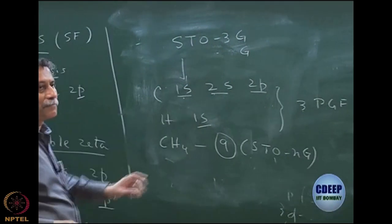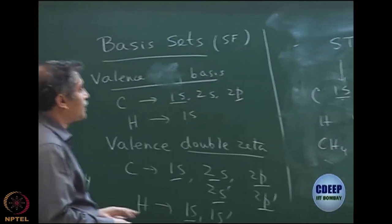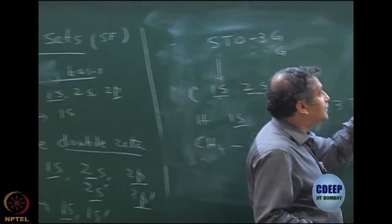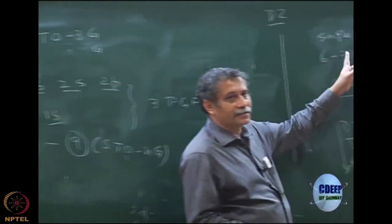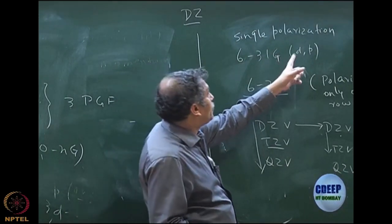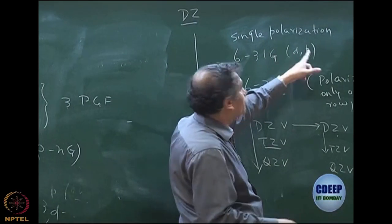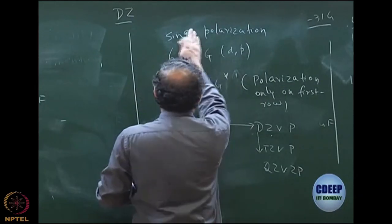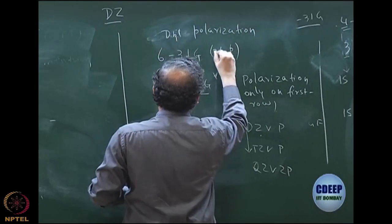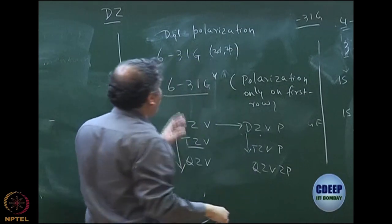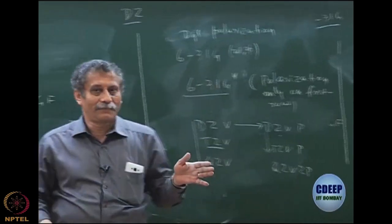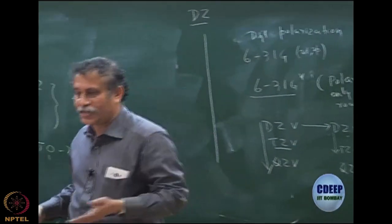The minimum is double zeta with at least single polarization. You can have 2D, 2P — that is double polarization. You can also have polarization beyond D and P, such as F, G, and so on.